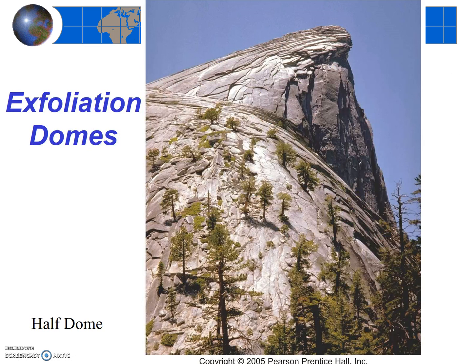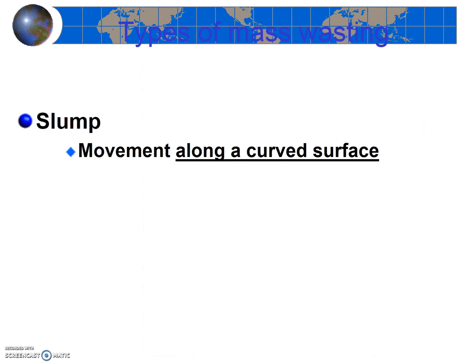Rock slides are also common in places like Yosemite and elsewhere in the Sierra. It's hard not to imagine these exfoliation sheets sometimes breaking loose and sliding right down the surface. You can google some pretty spectacular rock slides in and around Yosemite. Slumps are a specific type of slide where there is no distinct flat surface for the slide — no bedding plane, fault, or joint for the slide to occur upon.